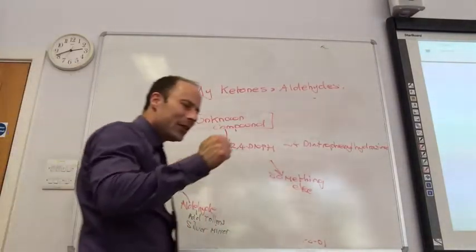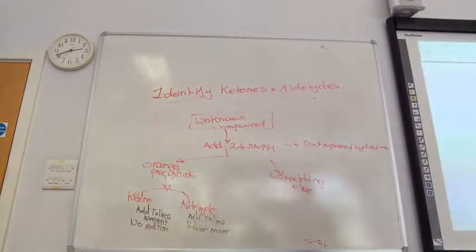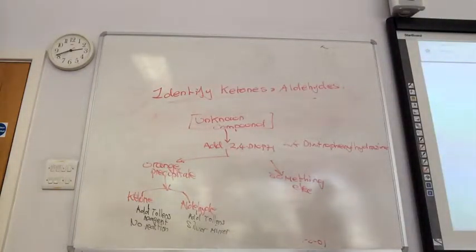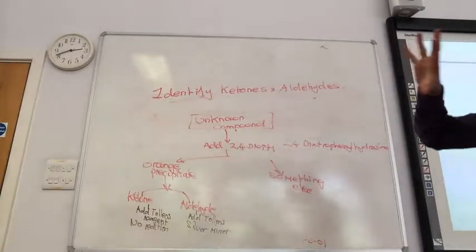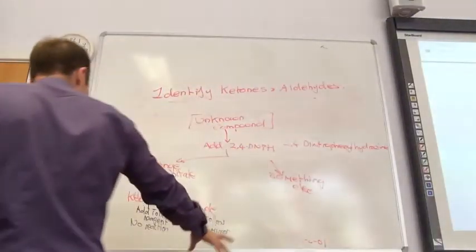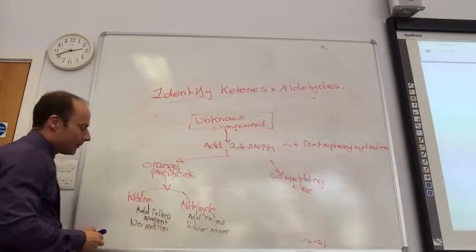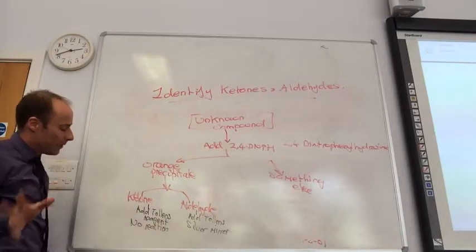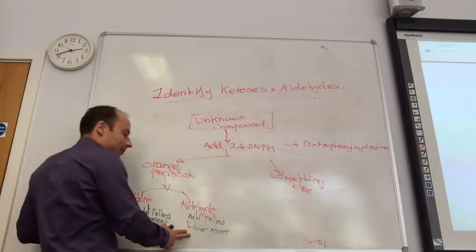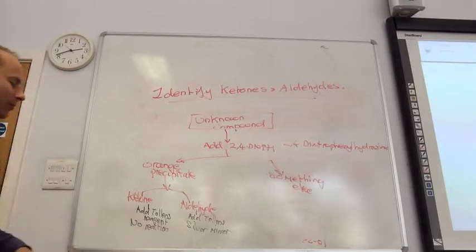Now, we'll do this next lesson. If you do it properly, and you swirl it, you see this silver precipitates around the test tube, and it's like a mirror effect. You can see your beautiful reflection in the test tube. Normally, it just comes up as grey sludge, but never mind.